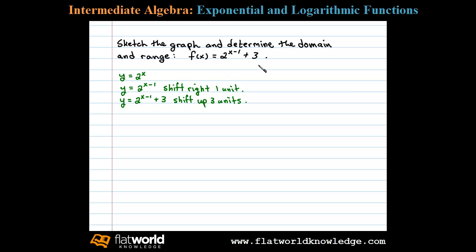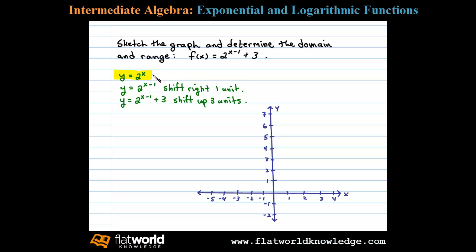Let's begin with the basic graph y equals 2 to the x power. When x is negative 2, we have 2 to the negative 2 power, which is 1/4, so negative 2 comma 1/4 is a point on that graph. When x equals 0, 2 to the 0 is 1, giving y-intercept 0 comma 1. When x equals 2, 2 to the second power is 4, so 2 comma 4 is another point. We can now sketch y equals 2 to the x.